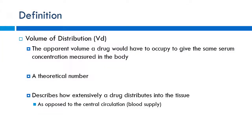That covers absorption. Next is distribution — where does the drug go once it's in the body? Just as packages are distributed from a central hub to homes, drugs must be distributed from the central circulation out to the body after absorption. The key concept here is volume of distribution (VD): the apparent volume a drug would have to occupy to produce the same serum concentration measured within the body.